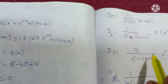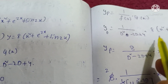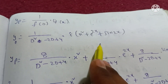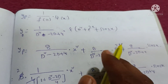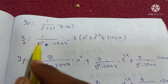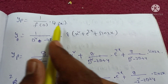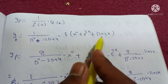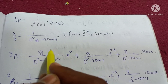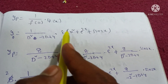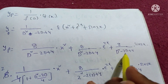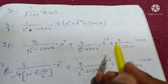yp is equal to 1 by f of d into Q of x. Since f of d equals d squared minus 2d plus 4, we have yp equals 1 over (d squared minus 2d plus 4) into Q of x, where Q of x equals 8 into x squared plus e to the power 2x plus sin 2x.